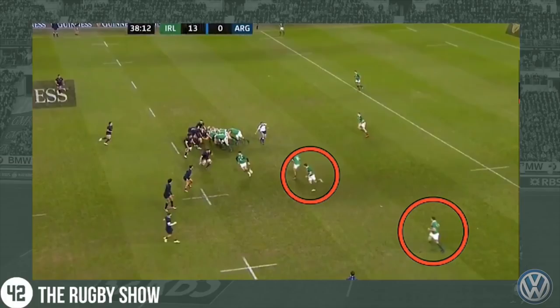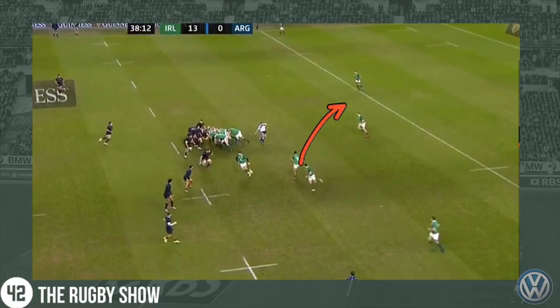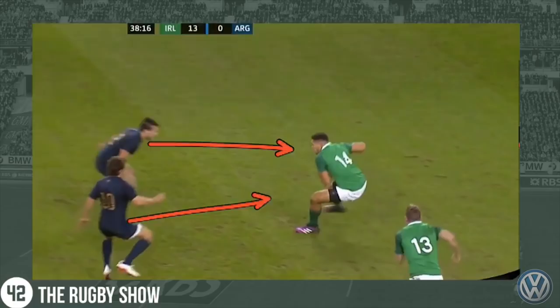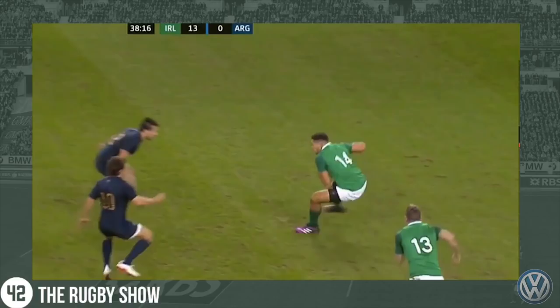Ackie throws that pass maybe a little bit early to Chris Farrell, and you can see the Argentinian defenders are already closing up into that space. He sees nothing in front of him, he has to hit Adam Byrne — he's got two defenders on him. It's a real mess of a first-phase attack, and he gets tackled just behind the gain line. The forwards have to get around the corner to get to that ruck.